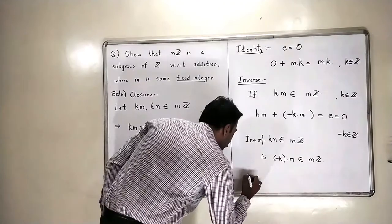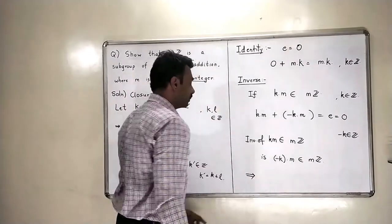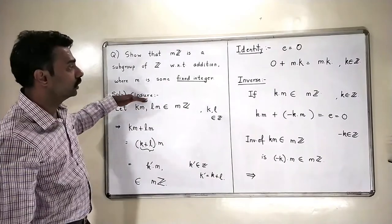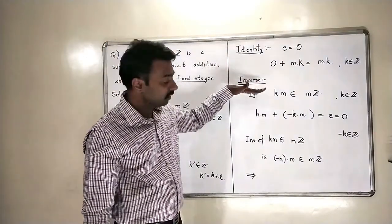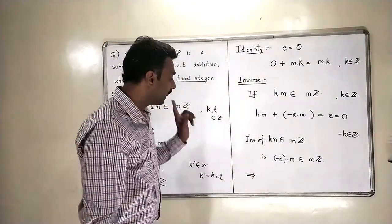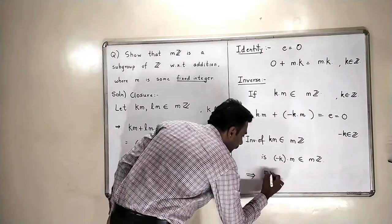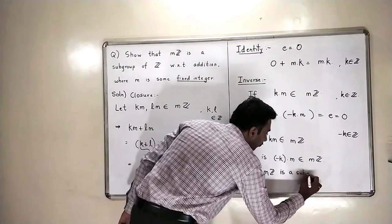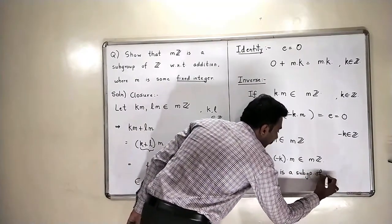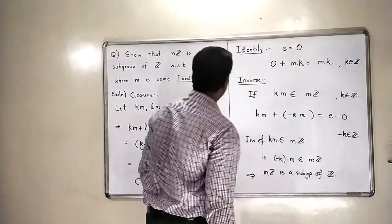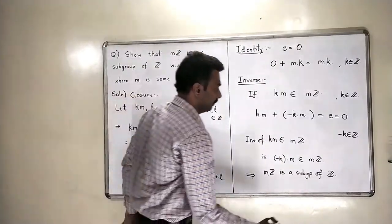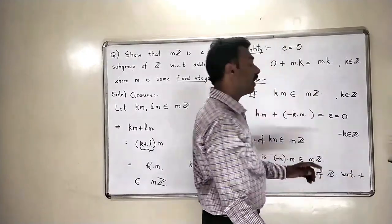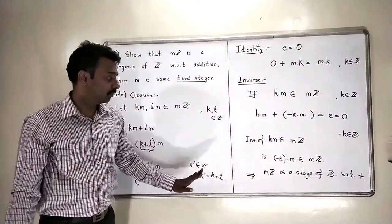So, this means that by our theorem which says for a subgroup, you have to only prove closure, identity and inverse. So, this means that by that theorem, I will be sure that mZ is a subgroup of Z with respect to the operation addition. This finishes our first problem.